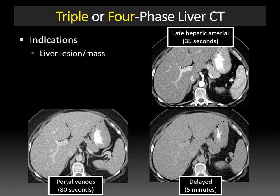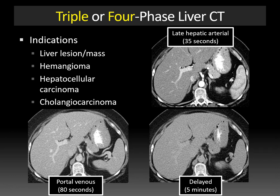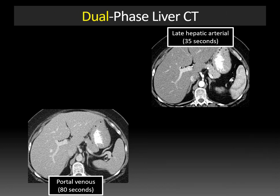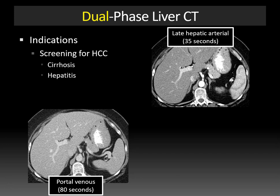The indications for this study are typically to evaluate a liver lesion or mass — hemangioma, hepatocellular carcinoma, cholangiocarcinoma, and others. There's debate as to whether the non-contrast portion is essential in every study, hence the triple-phase liver CT protocol. You can also do a dual-phase liver CT, typically for patients screened for hepatocellular carcinoma, like those with cirrhosis or hepatitis, and patients with abnormal LFTs, eliminating the non-contrast and delayed equilibrium phase series.